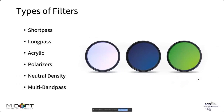In addition to bandpass filters, Midwest Optical Systems offers lots of different filters including short pass, long pass, polarizers, neutral density, and multi-bandpass filters. Acrylic is also available — while not a filter type per se, it's a material with great benefits. We'll cover these filters and talk about how they can help in different applications, presenting real-world images to help you think about how to use them.